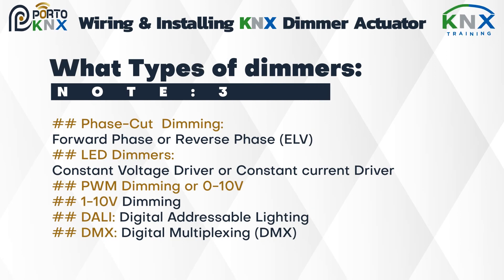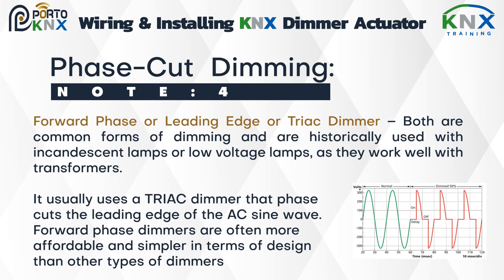What types of dimmers are there? One: phase-cut dimming — forward phase or reverse phase. Two: ELV LED dimmers — controlled by constant voltage or constant current driver. Three: PWM dimming or zero-to-ten volt. Four: one-to-ten volt dimming. Five: DALI — Digital Addressable Lighting Interface. Six: DMX — Digital Multiplexing.